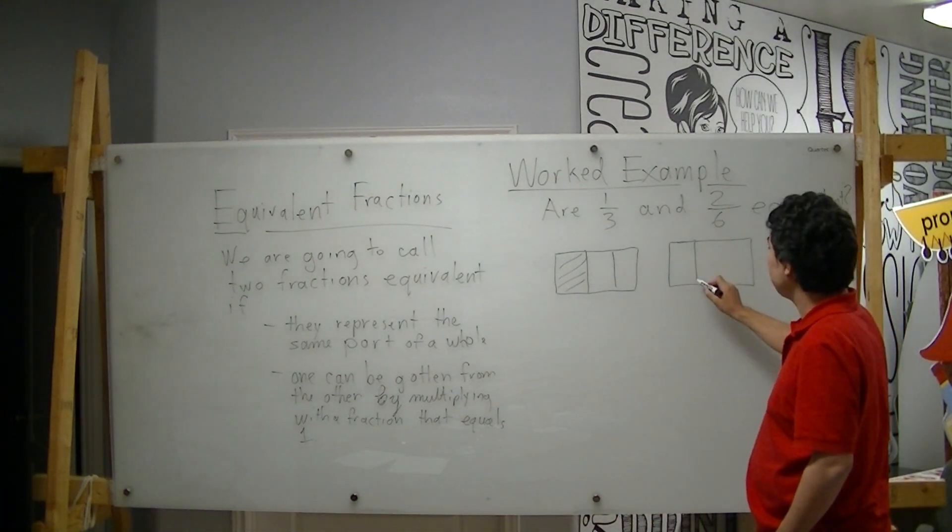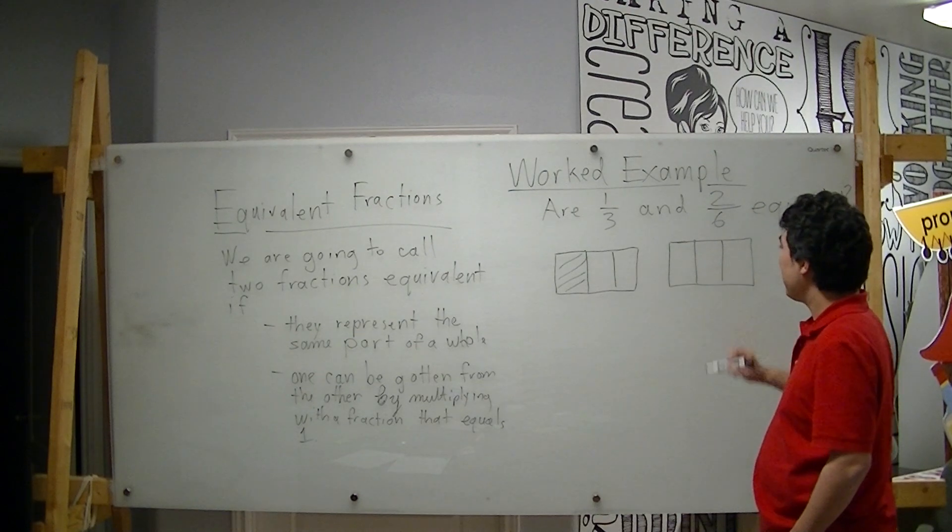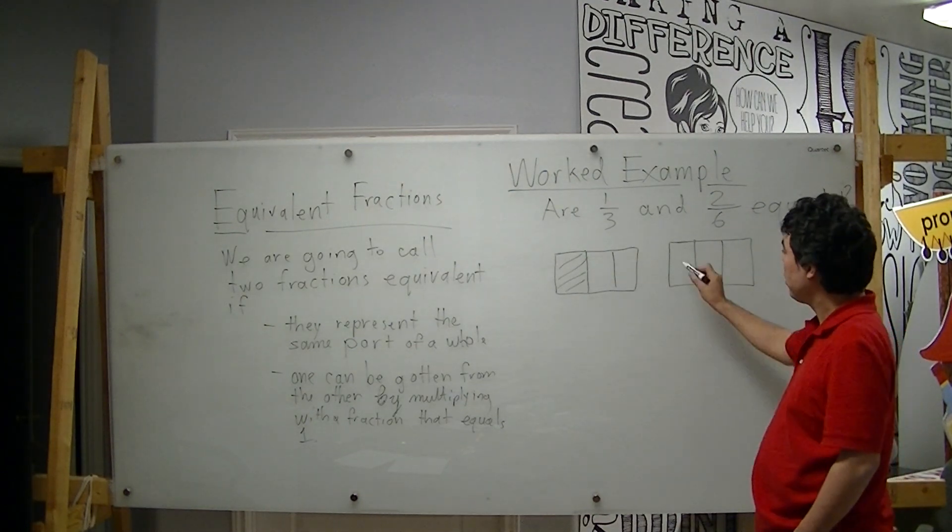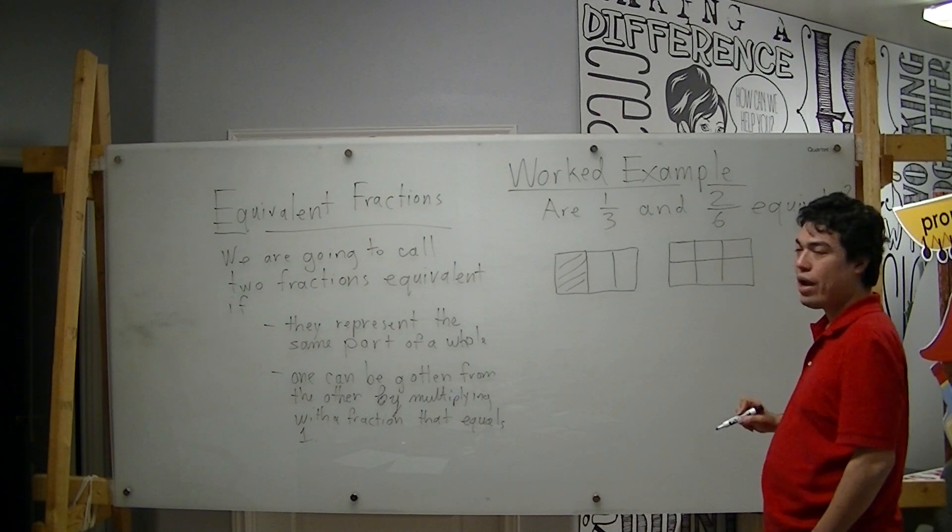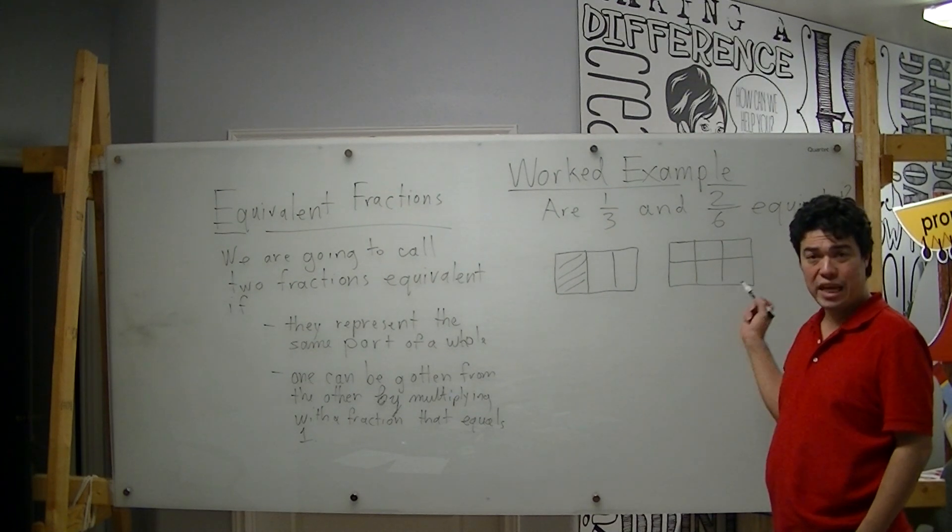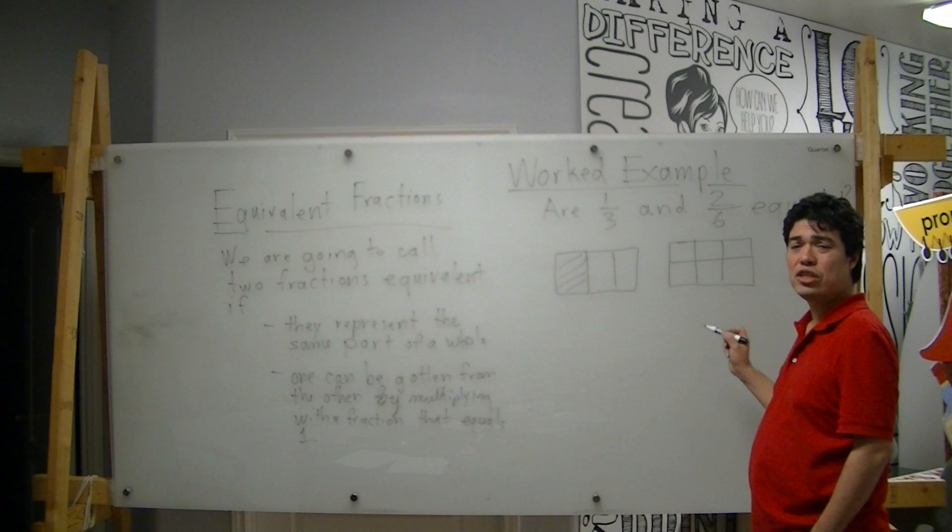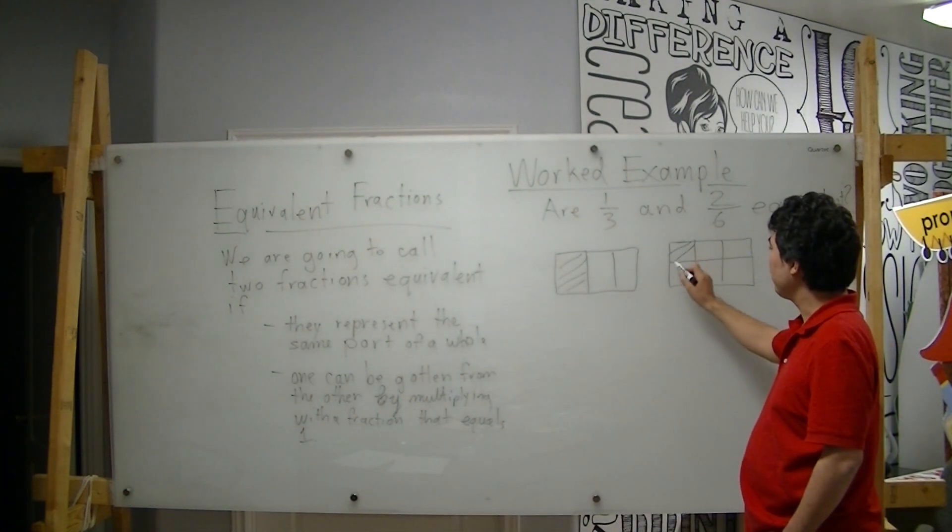And I can represent two-sixths as follows. I can make my same third marks, but I can slice it in half. And now, I have this same chocolate bar sliced into six equal pieces. And I will now shade two of them.